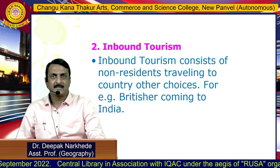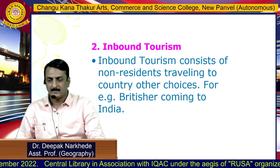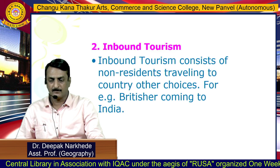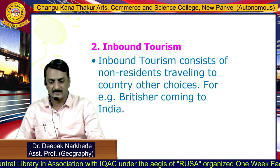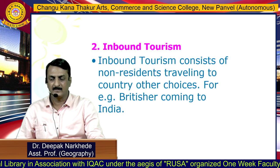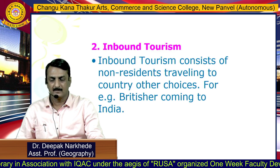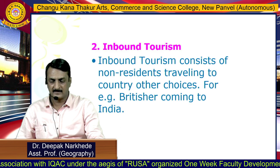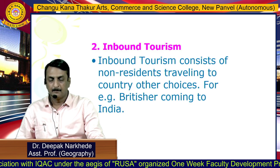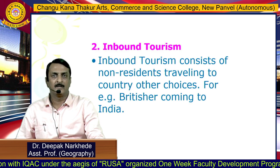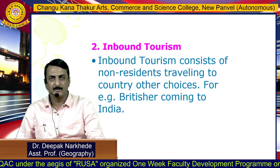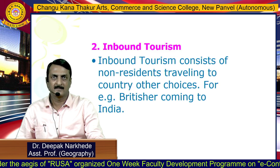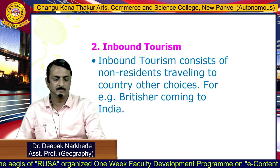The second category is inbound tourism, which consists of non-residents traveling to the country of their choice. For example, Britishers coming to India or Japanese coming to America are examples of inbound tourism.